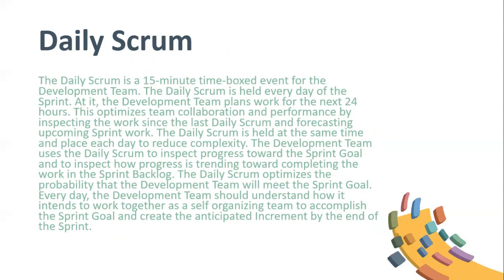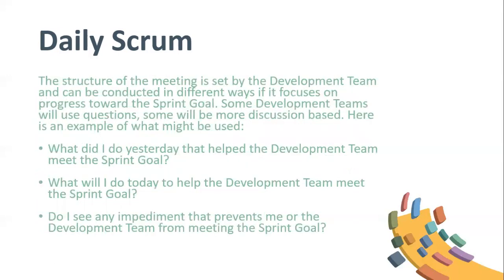Daily Scrum: the daily Scrum is a 15-minute time-boxed event for the development team, held every day of the sprint. At it, the development team plans work for the next 24 hours. This optimizes team collaboration and performance by inspecting the work since the last daily Scrum and forecasting upcoming sprint work. The daily Scrum is held at the same time and place each day to reduce complexity. The development team uses the daily Scrum to inspect progress towards the sprint goal and to inspect how progress is trending towards completing the work in the sprint backlog. The daily Scrum optimizes the probability that the development team will meet the sprint goal. Every day, the development team should understand how it intends to work together as a self-organizing team to accomplish the sprint goal and create the anticipated increment by the end of the sprint. And that concludes part three of the Scrum Guide.